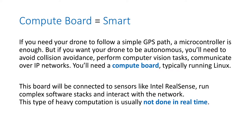The compute board is in charge of the smart part of the drone. If you need your drone to follow a simple GPS path, a microcontroller is enough. But if you want your drone to be autonomous, you'll need to avoid collisions, you'll need to perform computer vision, and communicate with IP-based networks like the Internet — so you'll need a compute board, typically running Linux. This board will be connected to a sensor like Intel RealSense, run complex software stacks, and interact with the network. This type of heavy computation is usually done not in real-time.